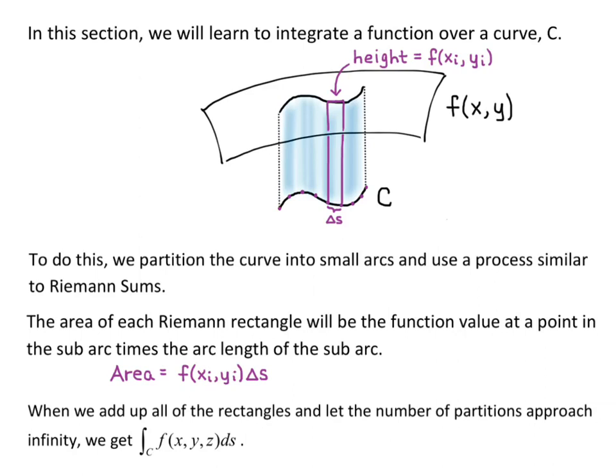When we add up all of the rectangles and let the number of partitions approach infinity, we get the integral over curve C of f(x, y, z) ds — that would be if our function was a function of three variables. In the example I gave, it was a function of two variables, so we would get the line integral over curve C of f(x, y) ds. These are called line integrals.